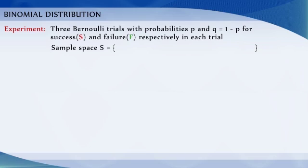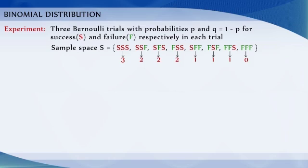Now the sample space of the experiment is S equal to the set: SSS, SSF, SFS, FSS, SFF, FSF, FFS, and FFF. The number of successes is a random variable x and can take values 0, 1, 2, or 3.